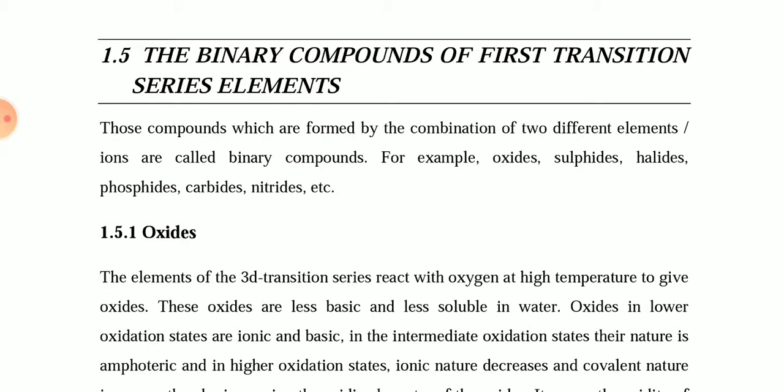Today's topic is binary compounds, which belong to the first transition series of the d-block elements. Those compounds which are formed by the combination of two different elements or ions are called binary compounds. For example, oxides, sulfides, halides, phosphides, carbides, and nitrides are all binary compounds.